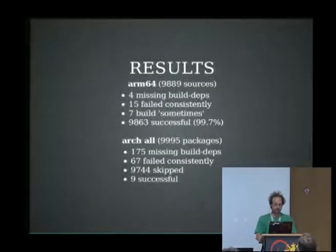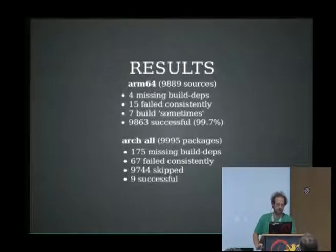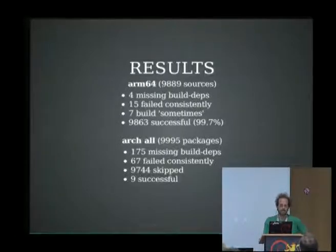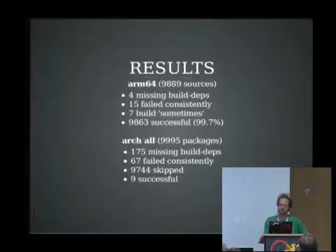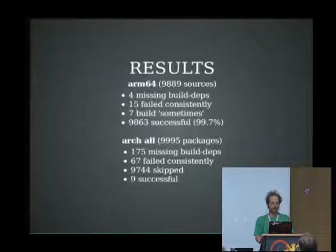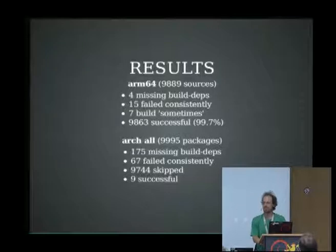Some results: of 9,889 source packages which should build an ARM64 binary, it turns out four of them in Jessie have missing build dependencies — that's probably a bug. 15 just broke for various reasons. Seven sometimes broke, which is interesting as a QA result. And 99.7% of them worked — so that's pretty good. We also actually built all the arch-all packages even though we asked it not to, and I don't know why that is.